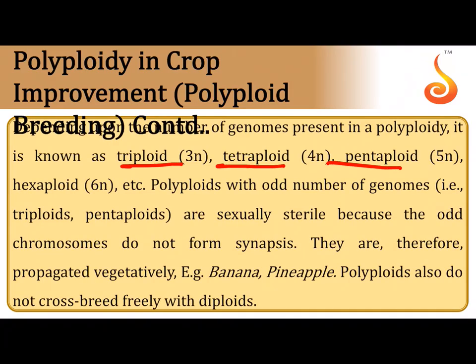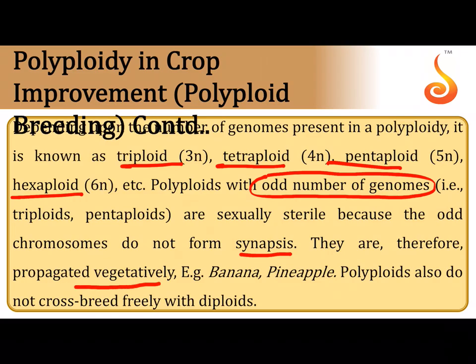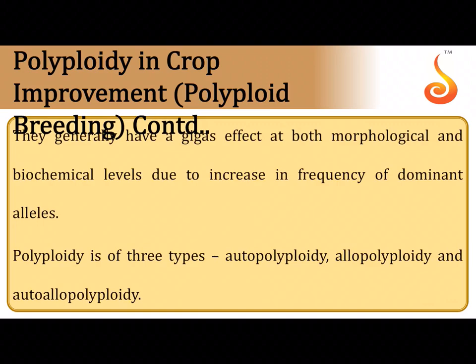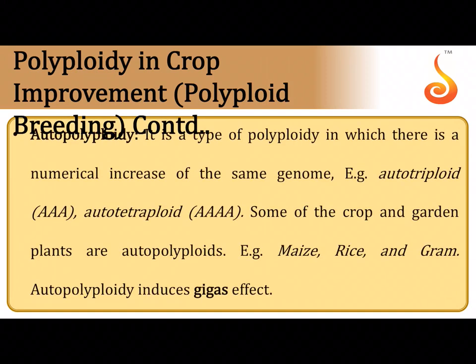Polyploids include triploids, tetraploids, pentaploids, hexaploids, and octaploids. Odd-number polyploids (triploid, pentaploid) have no proper chromosome pairing during gamete formation, so their gametes are sterile and they are propagated only through vegetative means. Polyploids generally exhibit the 'gigas effect' — they become gigantic in size, express more of certain proteins or biochemicals, and produce huge fruits, flowers, and plants. Polyploidy may be autopolyploid, allopolyploid, or auto-allopolyploid.